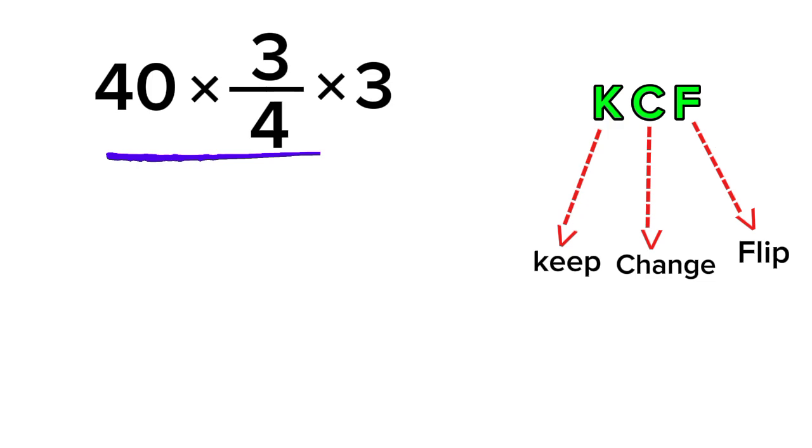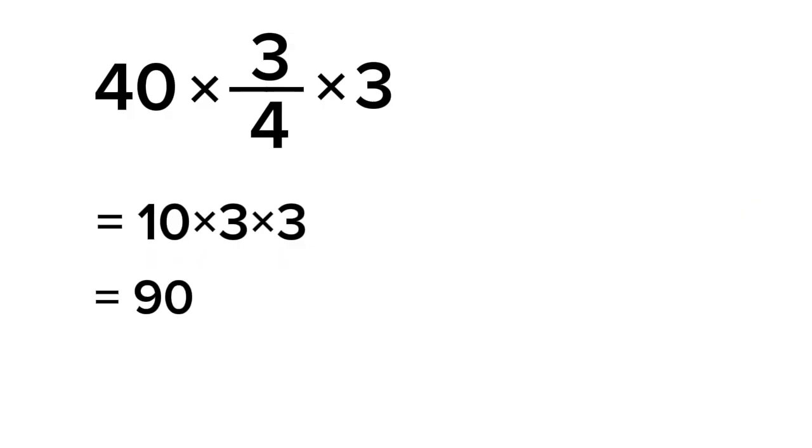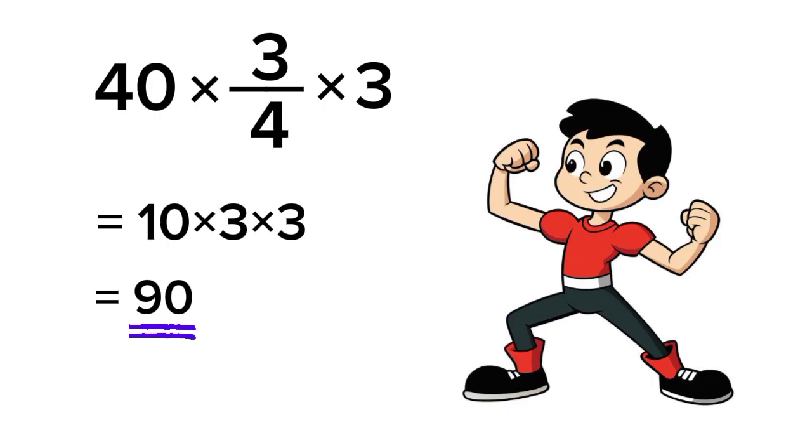Now, we can simplify this easily. 40 divided by 4 equals 10. So we're left with 10 times 3, and then still times another 3 from the expression. So, 10 times 3 times 3 equals 90. That's our correct answer, 90, not 10.